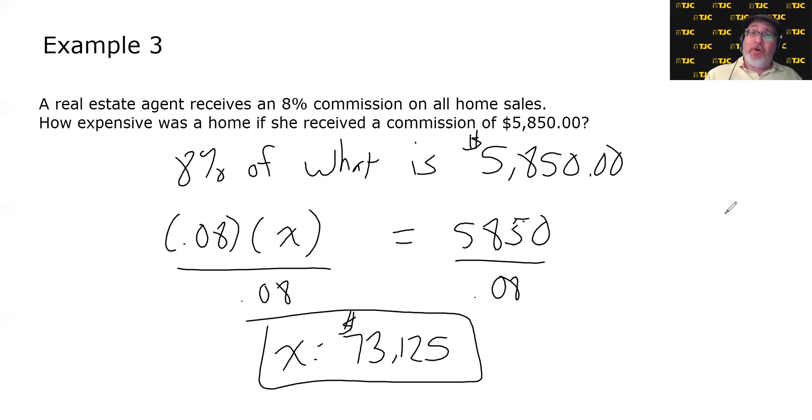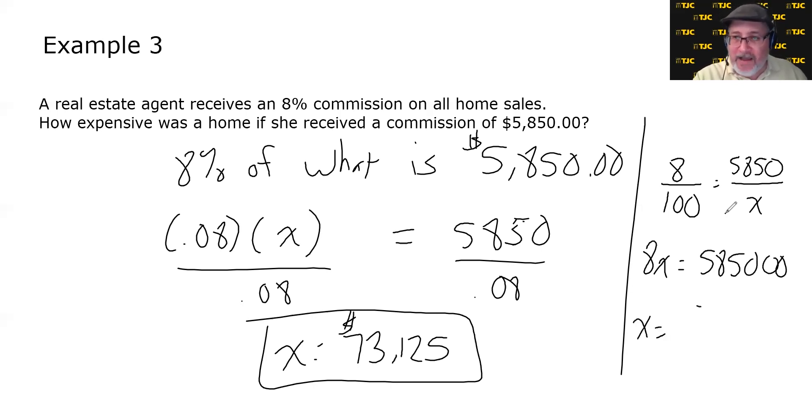Which can't get you a lot of house, depending upon where you buy it. And if we had chosen to do the proportion method, we know the percent is 8, so we would have 8 over 100. The is number is 5,850. The of number is what we don't know, that would be X. If we cross multiply, we would get 8X on one side, and it's easy to multiply by 100. We just have to put on two more zeros. And so X would be 585,000 divided by 8, which is going to give us the same answer.